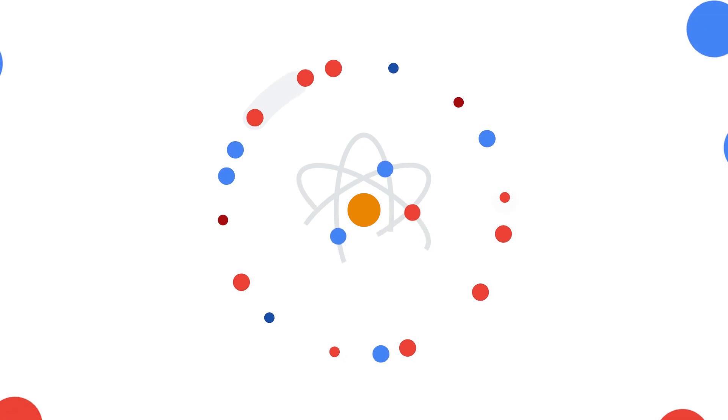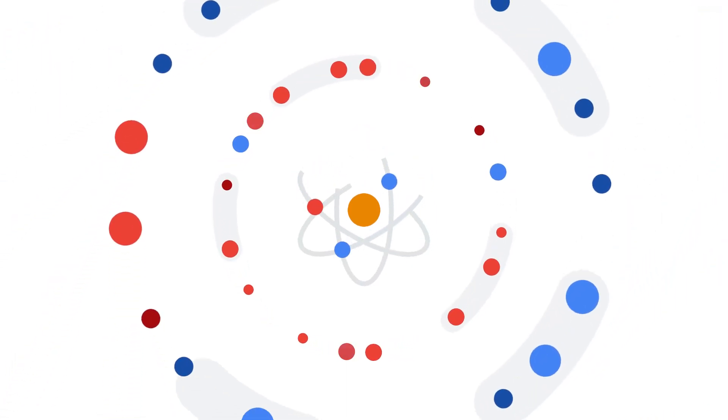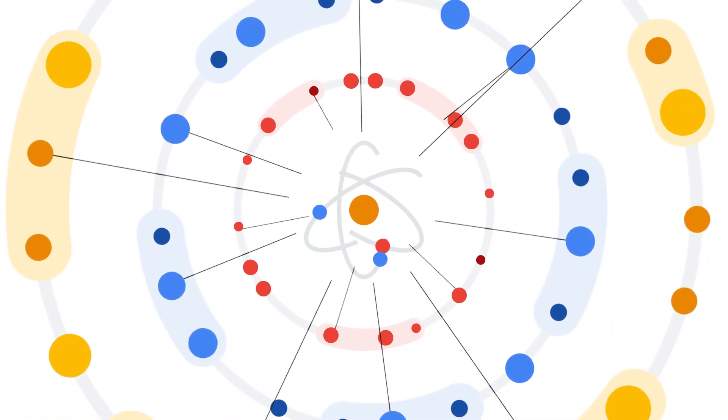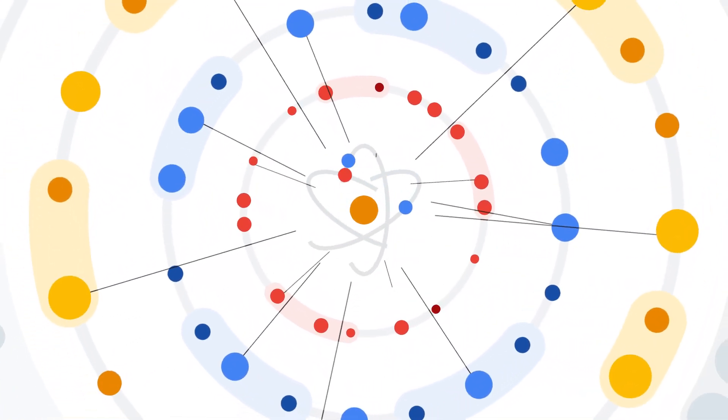Leveraging vector embeddings, you can enable applications to find relevance between data objects, prompt LLMs with context, and achieve long-term memory in your AI applications.